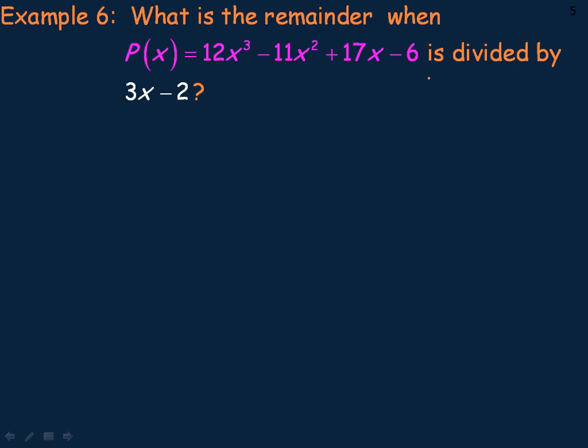So we would take the 3x minus 2 and say it cannot—that's the restriction—cannot equal 0. So 3x cannot equal 2. Dividing out the 3, we get 2 thirds. So that's the number that you would substitute in place of x everywhere in order to find what the remainder would be.